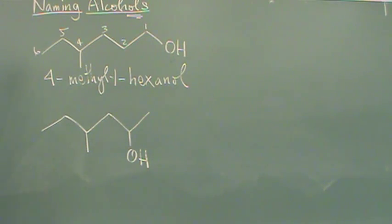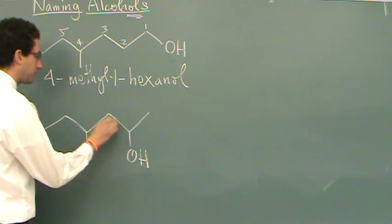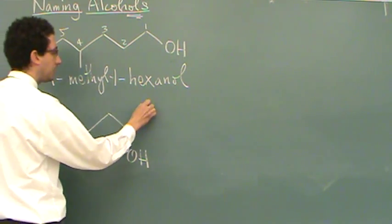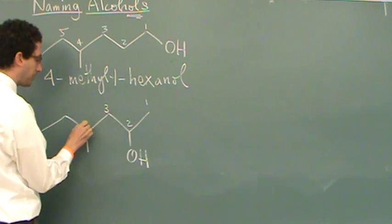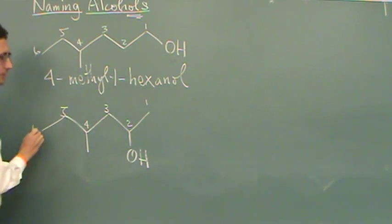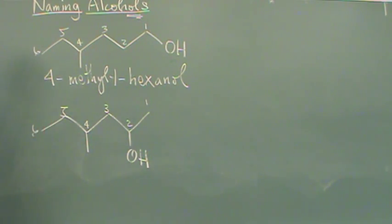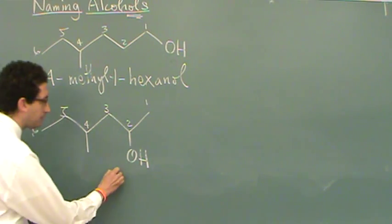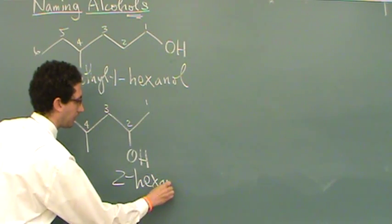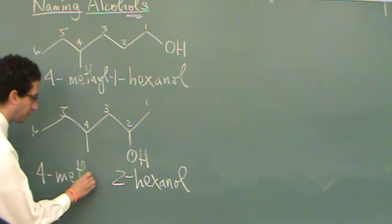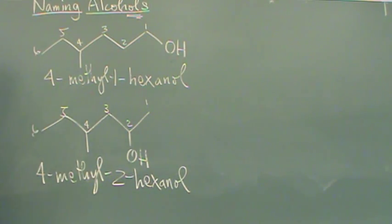Now, I changed it up slightly here at the one at the bottom. We still have one, two, three, four, five, six. The OH is on that side. Again, we want to have it on the main chain. So since it's on this side, we want to put the one closest to that side. You don't need the one on the place where the OH is, but you need it closest to the side of the OH. So this is also hexanol, but this will be a two hexanol. And again, the methyl is on the four position. So it's a four methyl two hexanol.